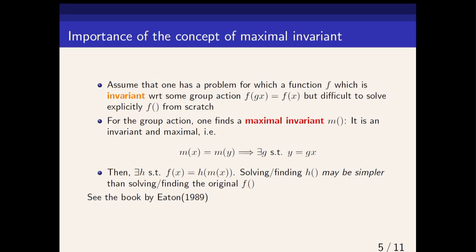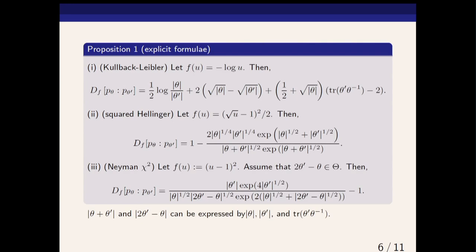If you have a difficult problem and you know that it is invariant to some action, and then you have an easier problem that you can solve that is a maximal invariant, then you know that your difficult problem is a function of the easy solution that you get. It's a very powerful method because you don't have to look at the geometry—it's really an algebraic proof that lets you write f(x) as a function of the maximal invariant.